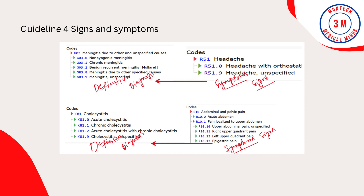Example for review: Headache is a sign and symptom and is an integral part of meningitis; hence it cannot be reported separately. Abdominal pain is a sign and symptom and is an integral part of cholecystitis; hence it cannot be reported separately.